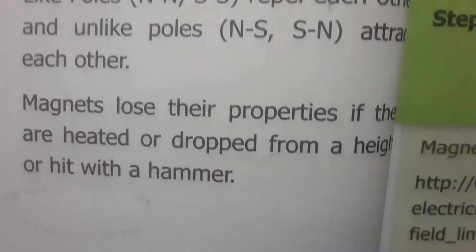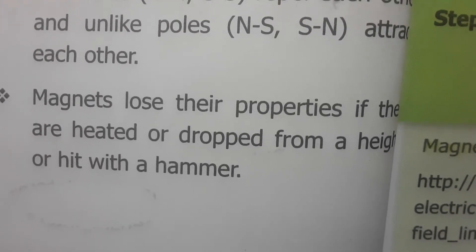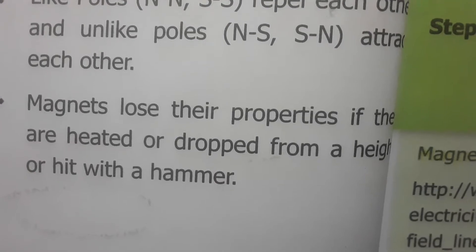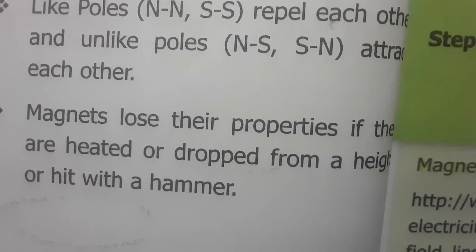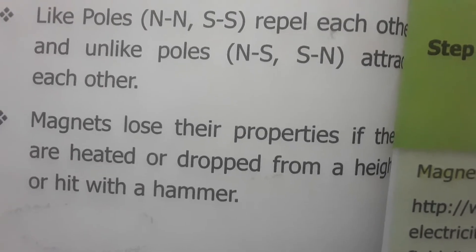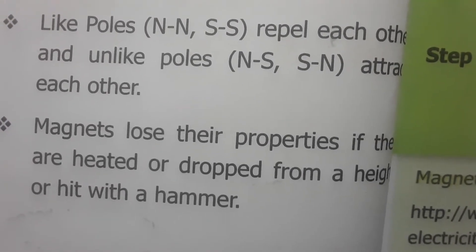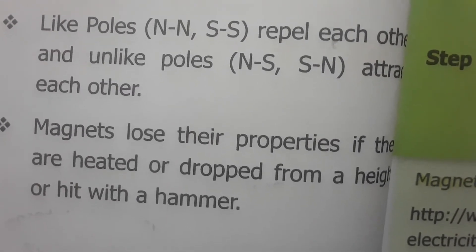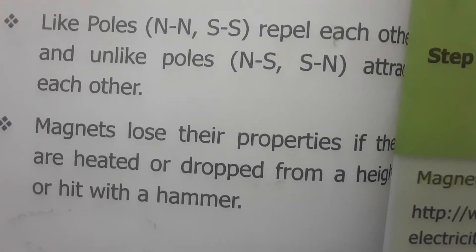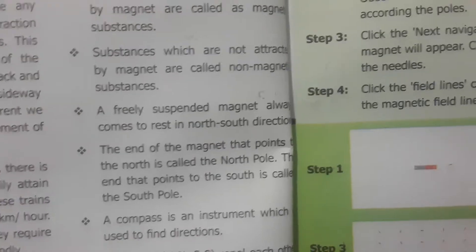Magnets lose their properties if they are heated, dropped from a height, or hit with a hammer. If you hit the magnet with a hammer, it loses its magnetic property. Similarly, if a magnet is kept in a heated object or placed inside a flame, it loses its magnetic property. Dropping from a height also causes magnets to lose their property.